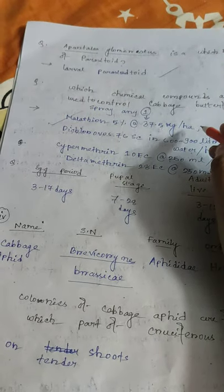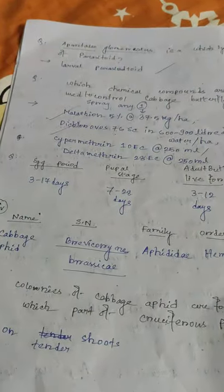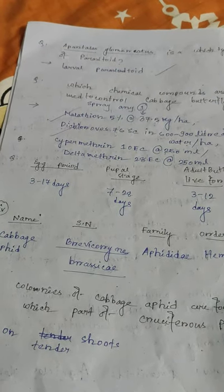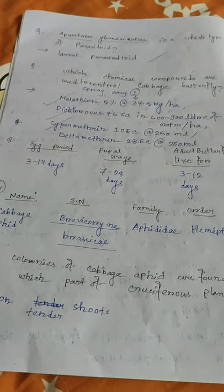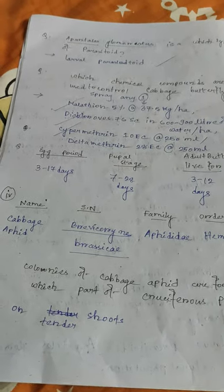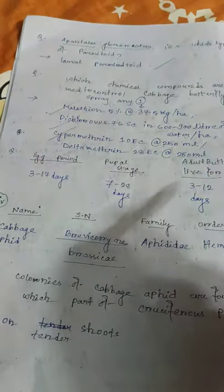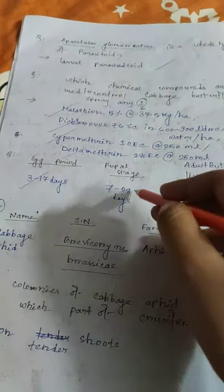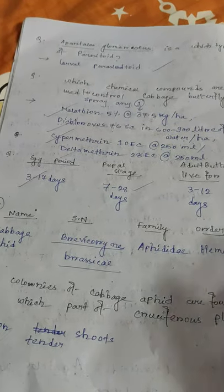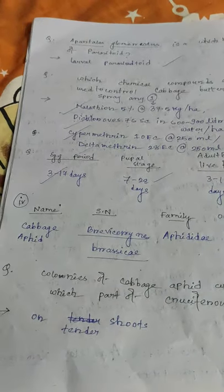Chemical compounds to control cabbage butterfly: spray any one of Malathion 5% at the rate of 37.5 kg per hectare, Dichlorvos 76 EC in 600 to 900 litres of water per hectare, Cypermethrin 10 EC at 250 ml, or Deltamethrin 28 EC at 250 ml per hectare. Egg period 3 to 17 days, pupal stage 7 to 28 days, adult butterflies live 3 to 12 days.